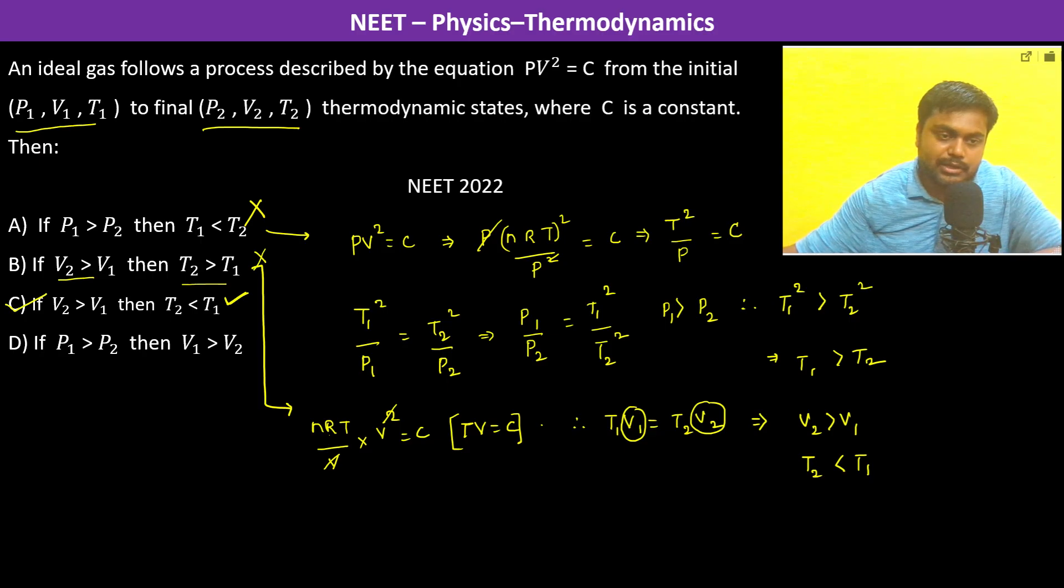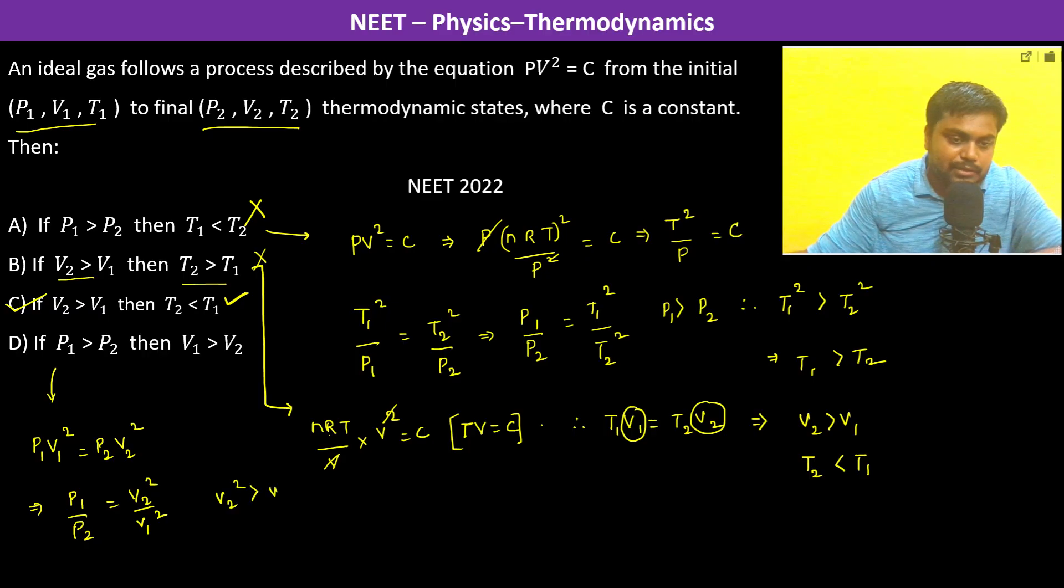C option is going to be the correct and D option, let us see. P1 greater than P2, V1. PV square is constant, therefore P1 V1 square is equal to P2 V2 square. P1 by P2 is equal to V2 square by V1 square. If P1 is greater than P2 then V2 square is greater than V1 square. That means V2 is greater than V1.